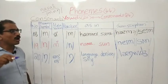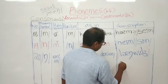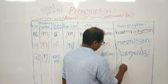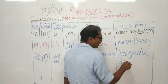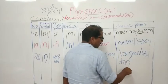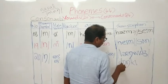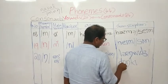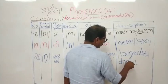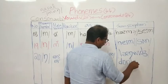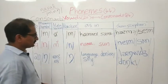The next example is 'donkey': D-O-N-K-E-Y. Look at here, I am writing here. D, O, then N, then K or K, key. D sound is here, then O sound, then N, then K sound, then E sound. Donkey.